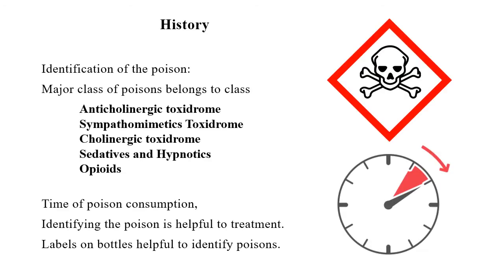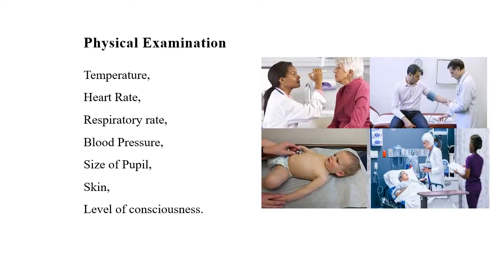Treatment begins with identification of the poison. The major classes include anticholinergic, sympathomimetic, cholinergic, sedatives, and opioids. Time of poison consumption and identifying the poison are helpful for treatment — labels on bottles help identify poisons. Physical examination including temperature, heart rate, respiratory rate, blood pressure, pupil size, skin, and level of consciousness give information about the type of poison consumed.